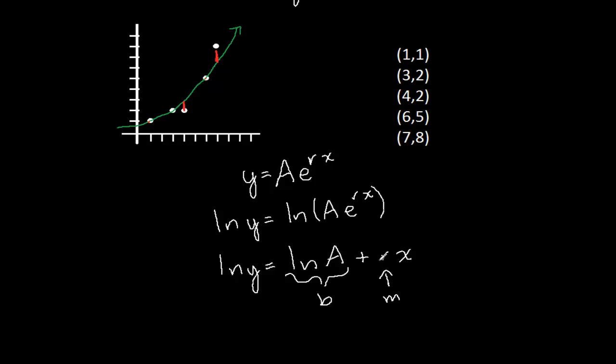Now we have a linear function. Our slope is r, and our y-intercept is natural log of A. So what we're going to do is we're going to take the natural log of the y values, and then we're going to perform linear regression.